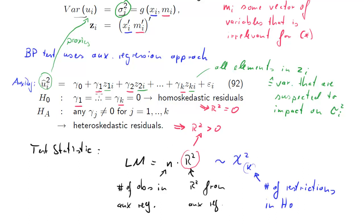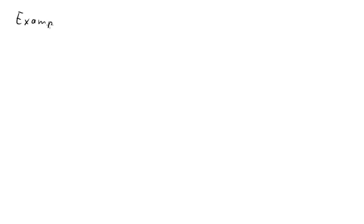k is the number of restrictions tested in the null hypothesis. It's not a coincidence that here we have k coefficients. We have k coefficients which we test whether they're equal to zero or not, and therefore k degrees of freedom.